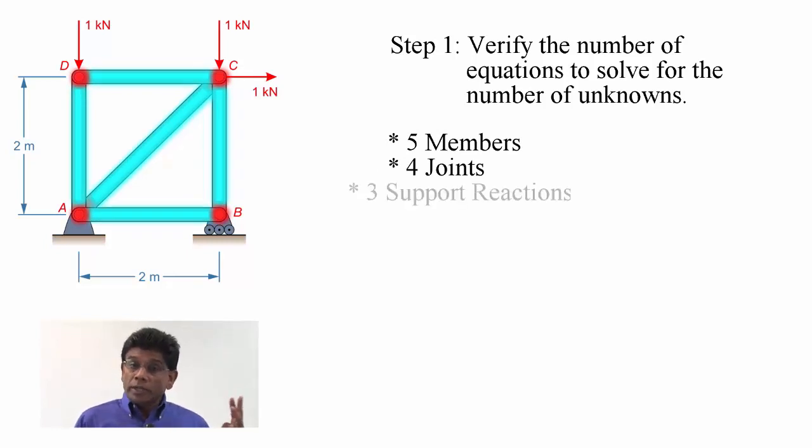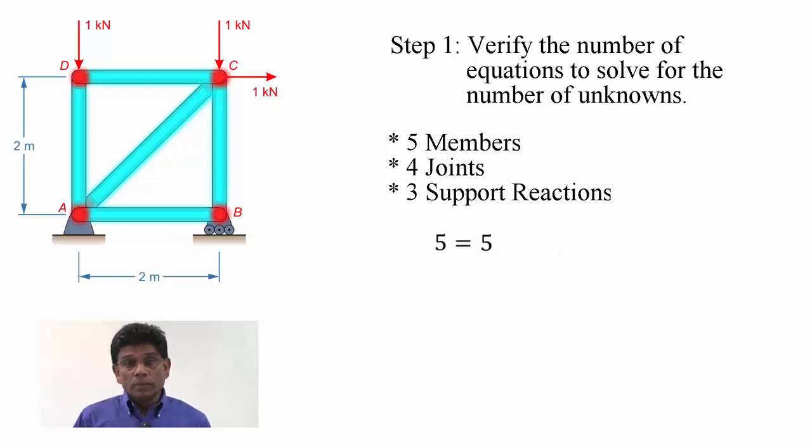There are also three support reactions. So the equation is, five equals two times four minus three, which gives us five. Meaning we can solve this problem. So we are in good shape and we can proceed.